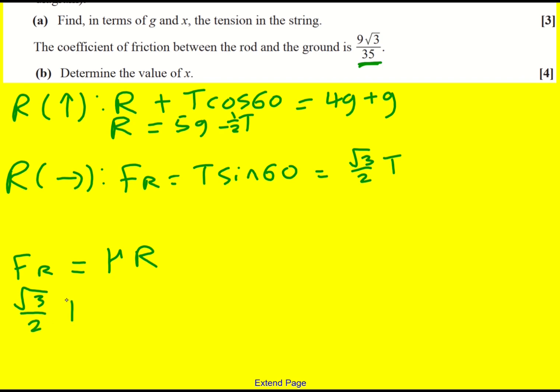root 3 over 2T is going to equal 9 root 3 over 35 multiplied by 5G minus a half T.